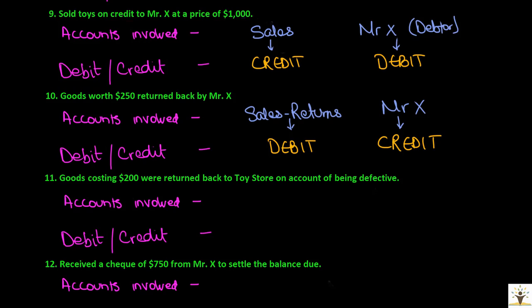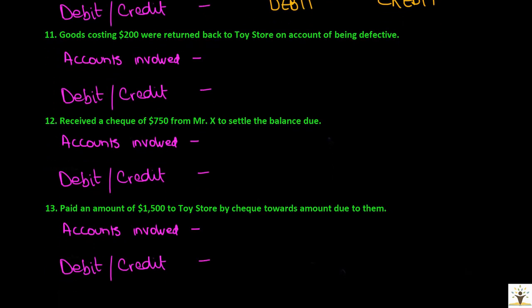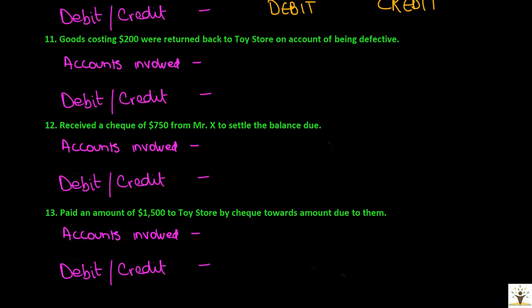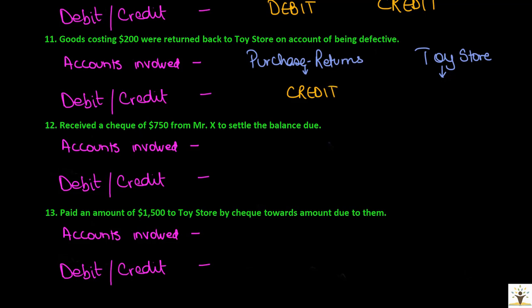Transaction: goods costing $200 were returned back to toy store on account of being defective. This is a purchase returns transaction. When goods were being purchased, purchase was debited. In a purchase returns transaction, the goods asset is decreasing — hence purchase returns will be credited. And toy store, which was a liability, decreases as a result of this transaction — hence toy store will be debited.